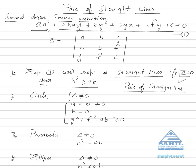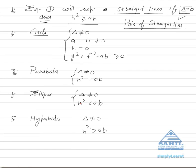For a parabola: delta must not equal zero and h² = ab. For an ellipse: delta must not equal zero and h² < ab. For a hyperbola: delta must not equal zero and h² > ab. So any given second degree equation can be identified as a pair of straight lines, a parabola, an ellipse, or a hyperbola.